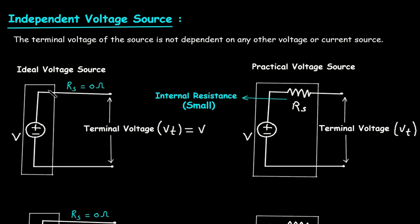Here we can see this is the ideal voltage source and this is a practical voltage source. In case of ideal voltage source, the series resistance is absent, or we can say series resistance value is 0 Ohm. RS is equal to 0 Ohm. In case of practical voltage source, there is a small internal resistance RS in series with this voltage source, and this is the terminal voltage Vt.